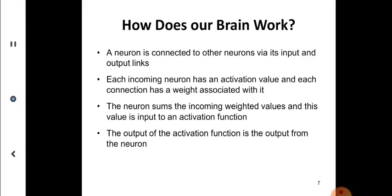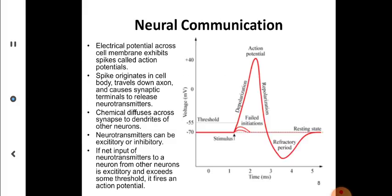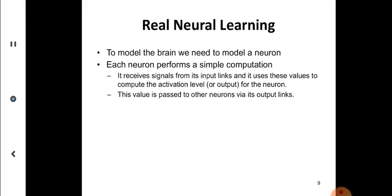It is actually single output because it is one activation function, one summation. You can have neural computation like this. These are different areas with time-wise variations. Real neural learning: to model the brain we need to model each neuron, which performs a single computation. It receives signals from its input links and uses these values to compute, then passes these values to other neurons via output link.